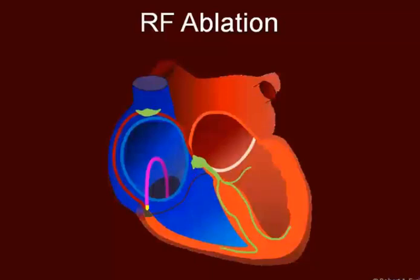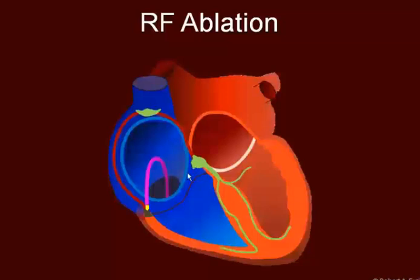There is a new procedure which is becoming more popular, and that's cryoablation. In that system, we freeze this tissue. One of the problems with radio frequency ablation is that you may accidentally destroy the normal pathway, requiring the patient to get a pacemaker. With the cryoablation technique, we can freeze this region — the slow pathway — to about minus 10 degrees. If the normal circuit fails, we can re-warm the tissue and try again. Once we've discovered that we've successfully destroyed only the slow pathway, we can bring the temperature down to minus 70 and permanently destroy that pathway.